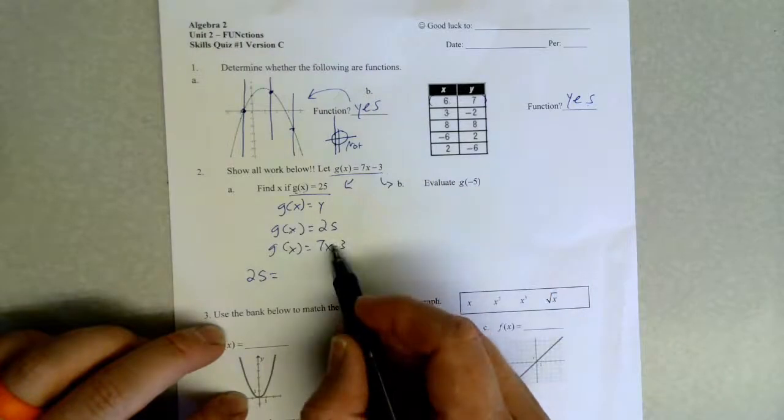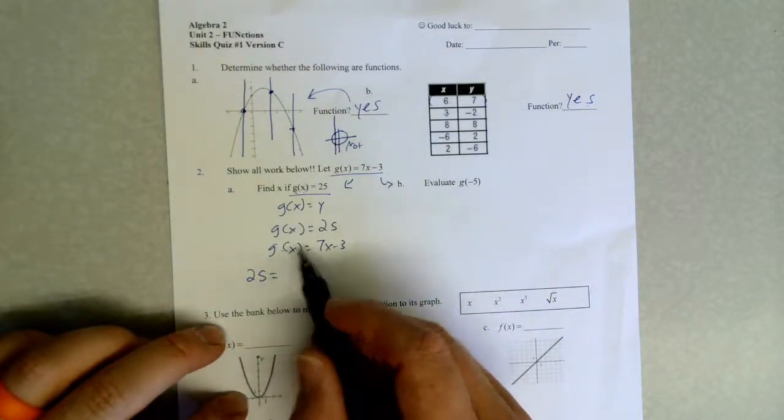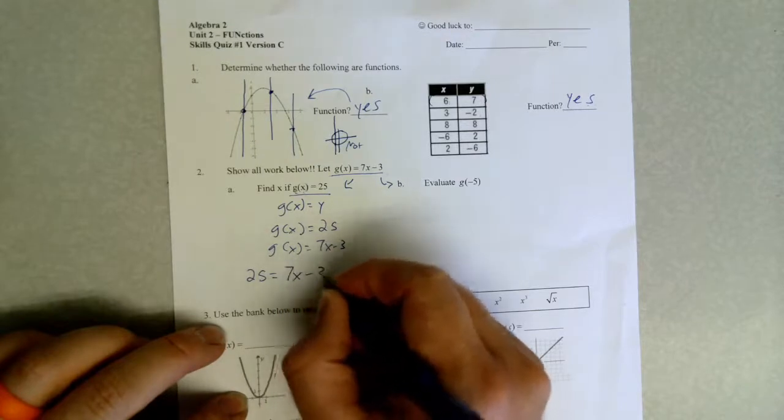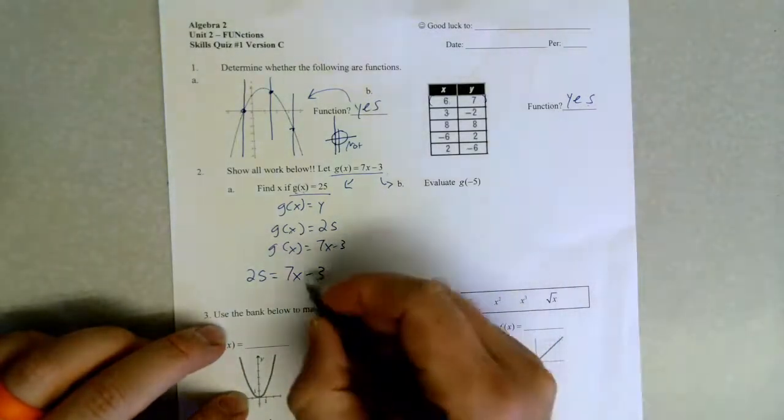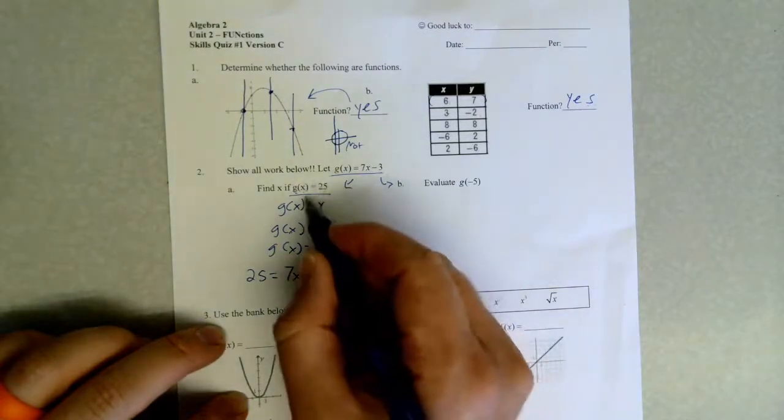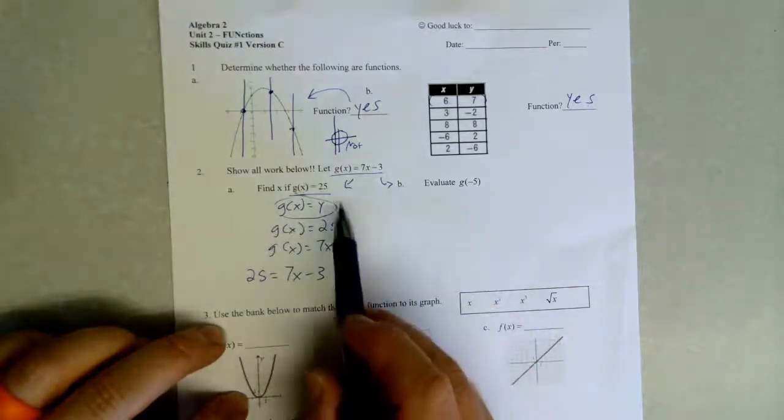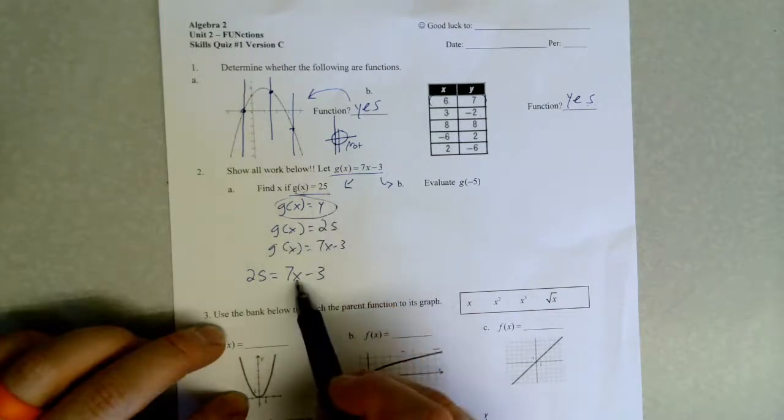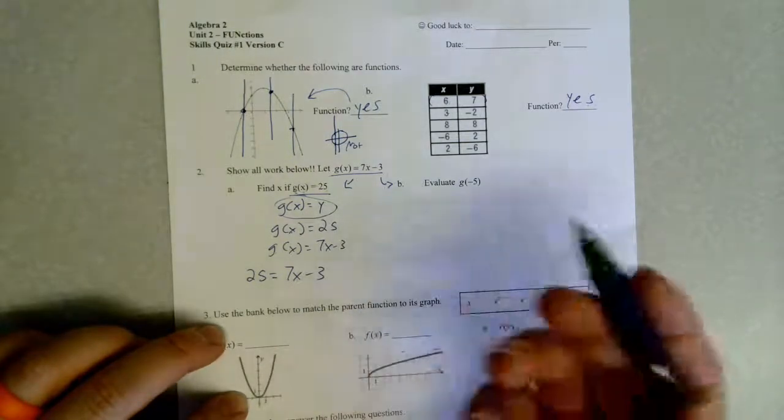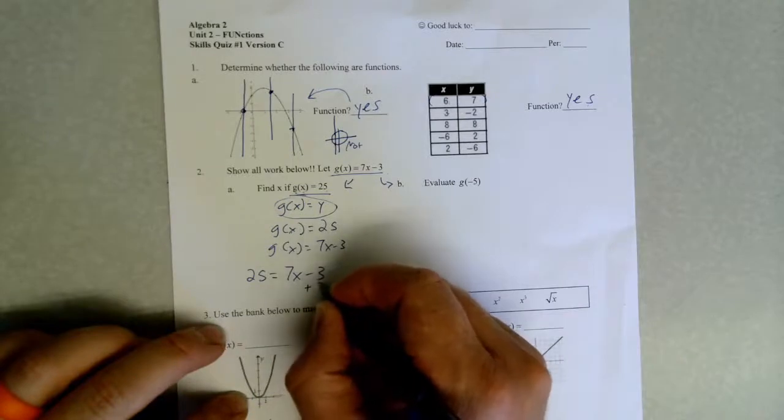Basically, when there's no numerical value you put these two equal to each other. If g(x) equals 25 and g(x) also equals 7x - 3, well if it equals one and equals the other, take away the g(x) and you set them equal to each other. Then you're just going to solve for x. What's my input? So basically what this means is that we are given the output, we are solving for x, which means solving for the input. Basically a two-step equation here.